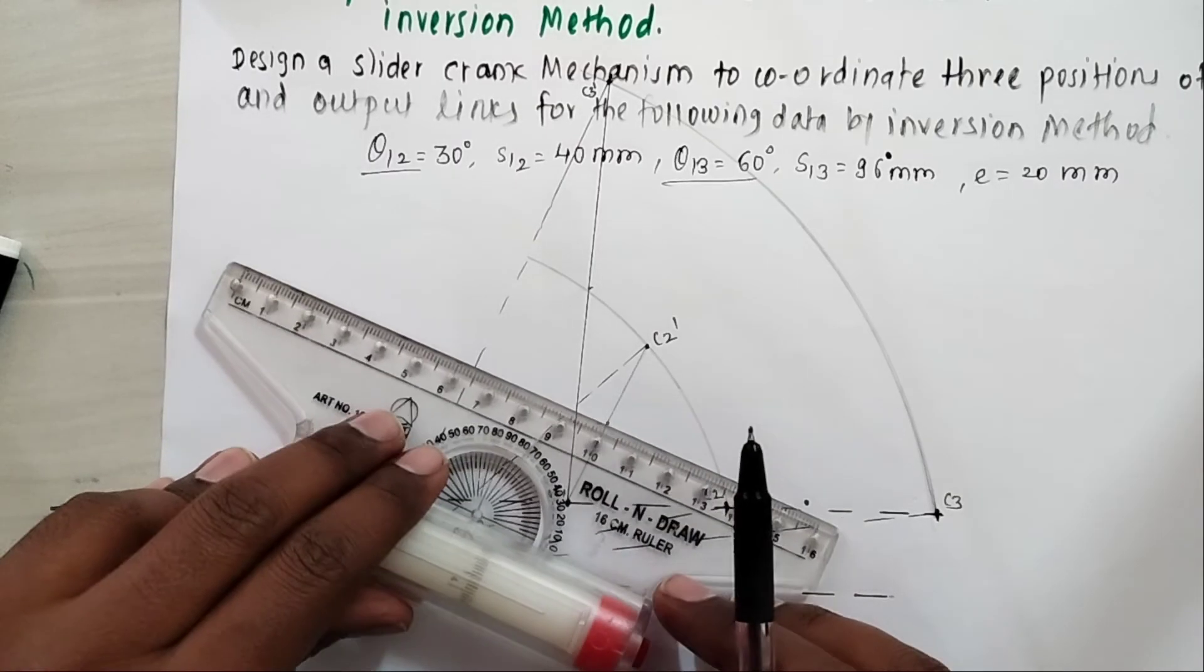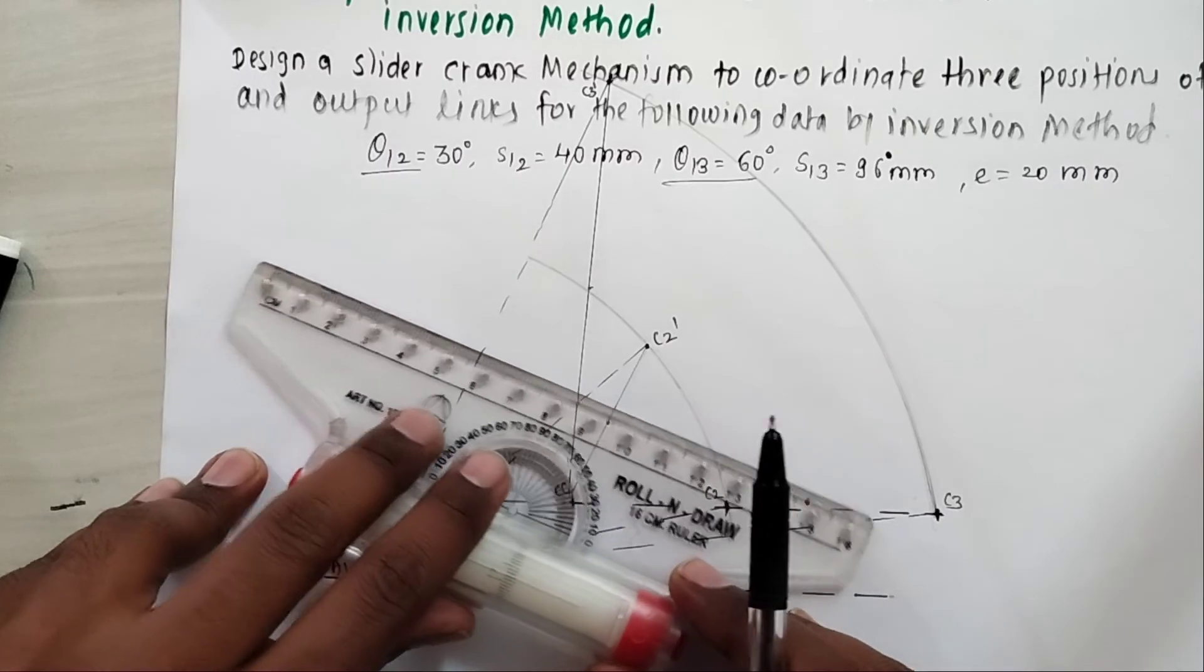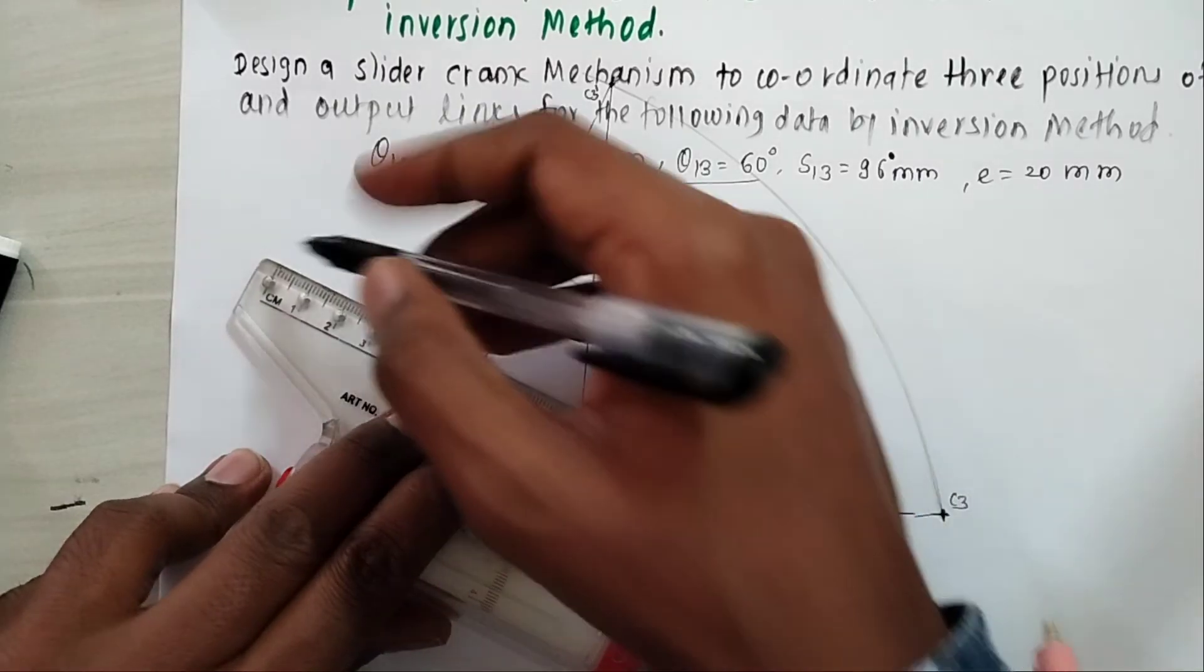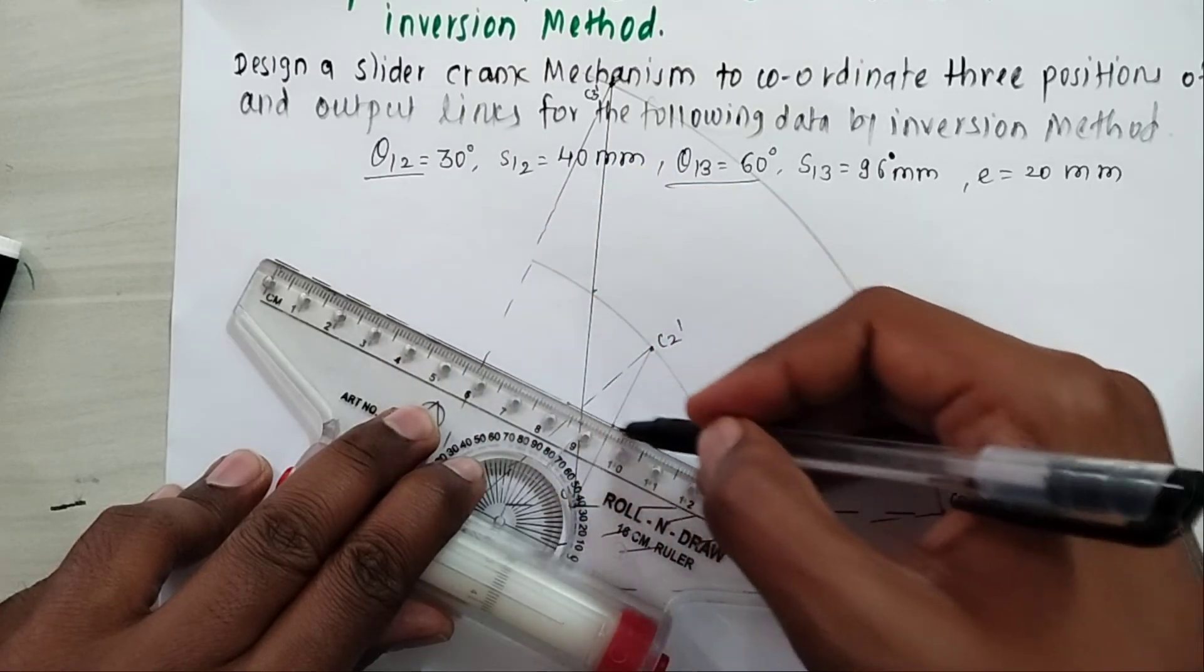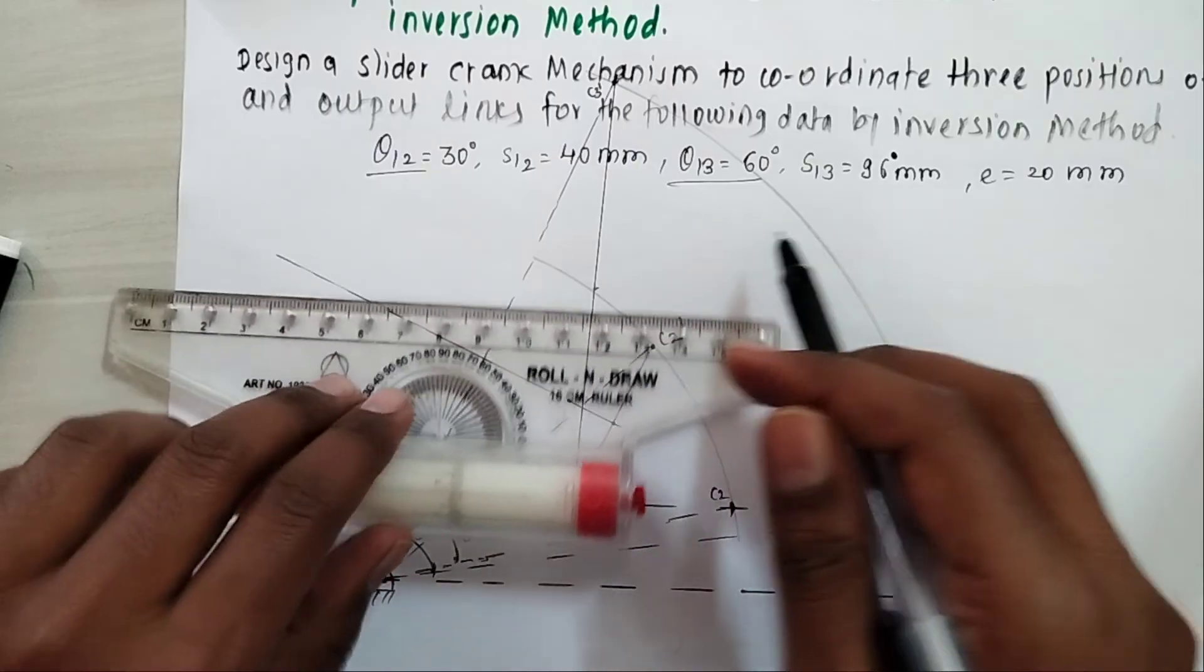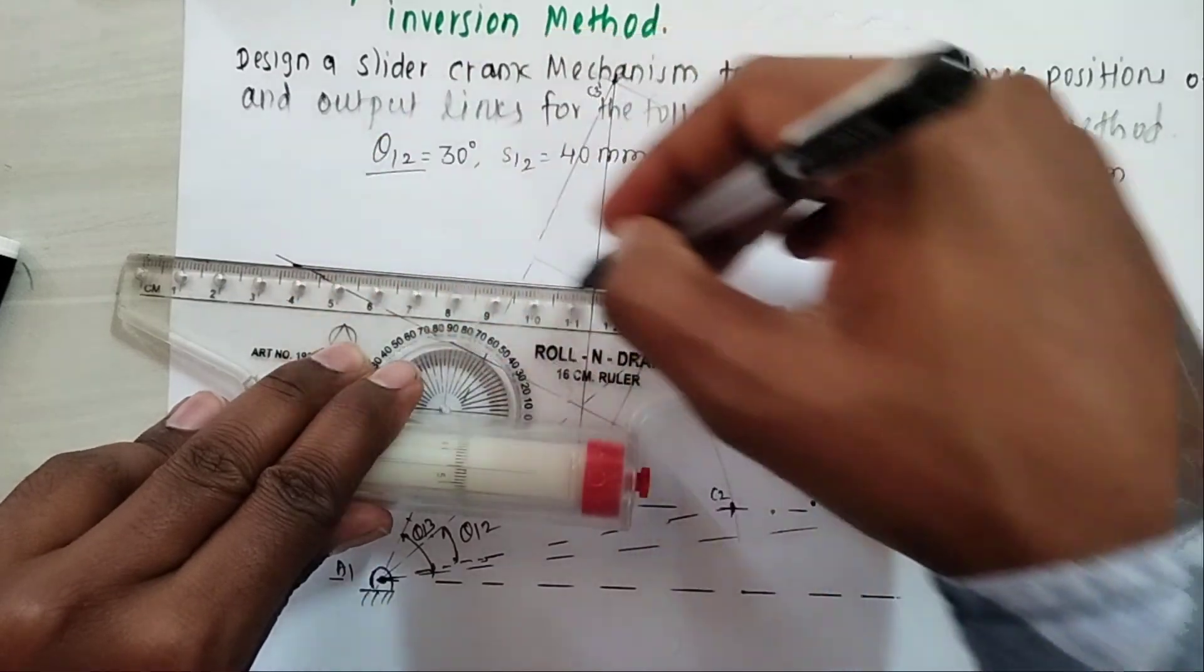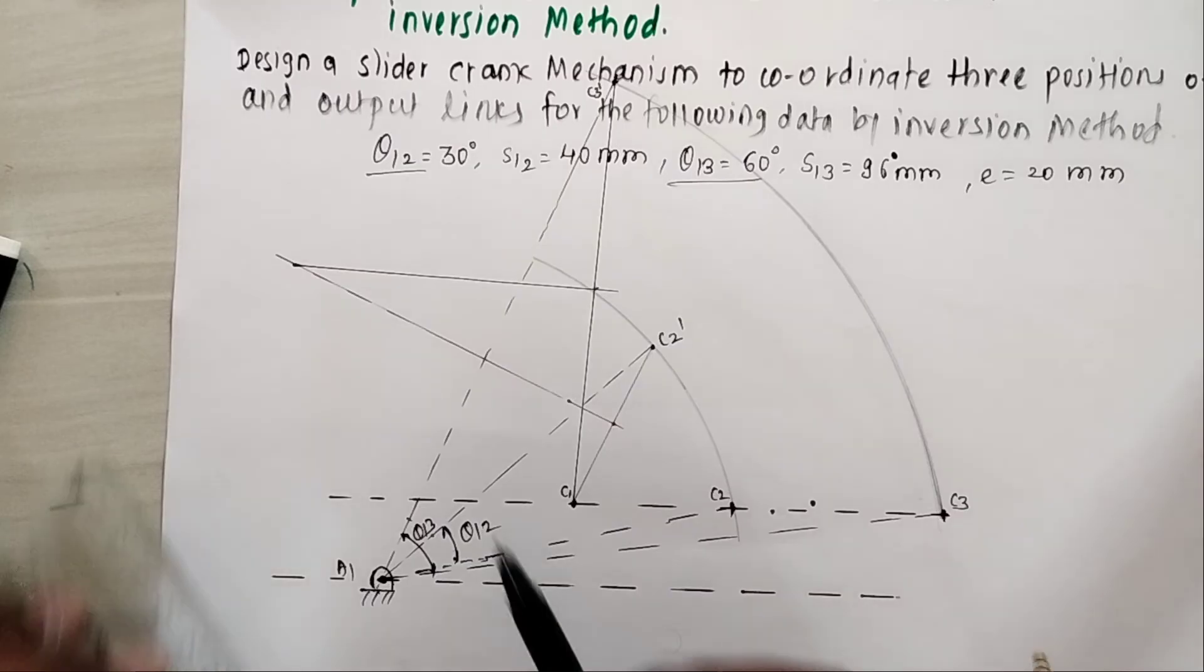This is for C1C2 dash, and now for C1C3 dash. You get perpendicular bisectors here.